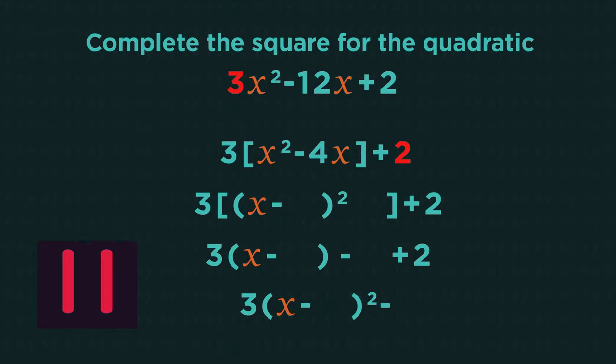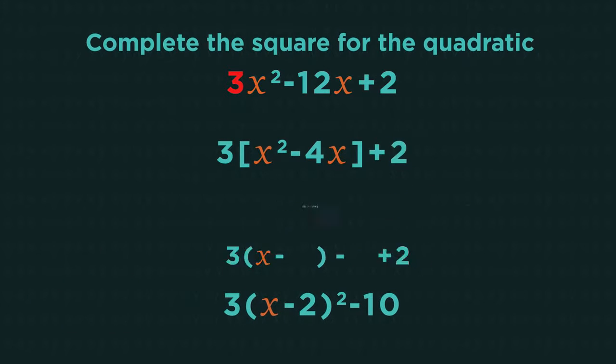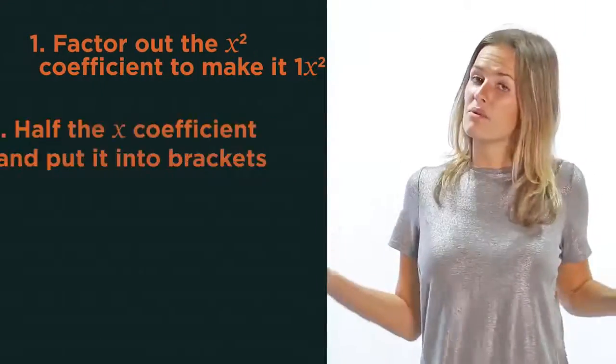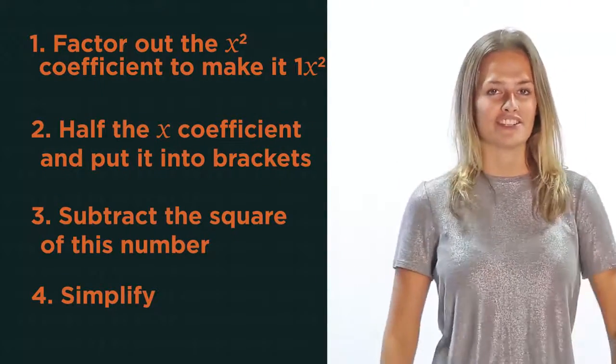Pause the video, complete the square, and click play when you're ready to check. Did you get it right? 3x minus 2 squared minus 10. So there we have completing the square for any quadratic with or without an x squared coefficient of one. You just need to remember this process.